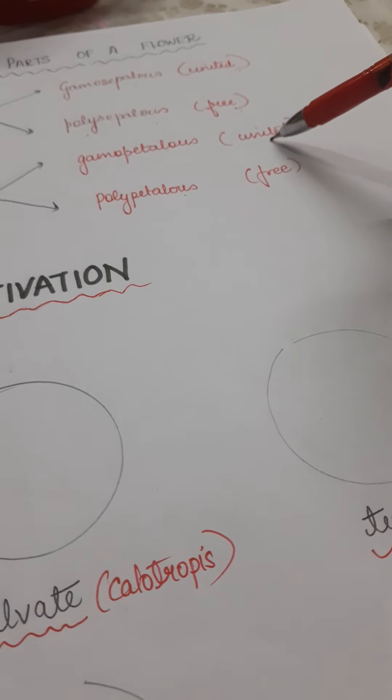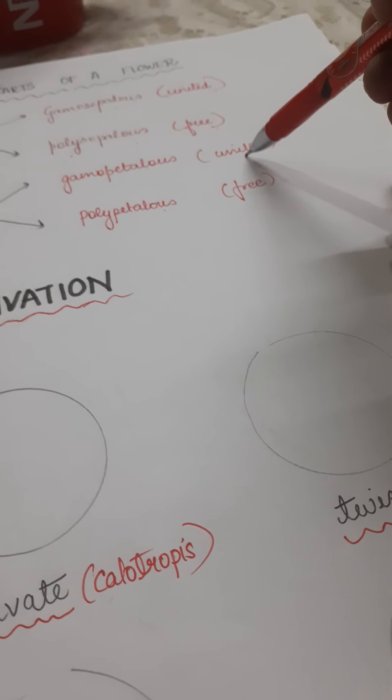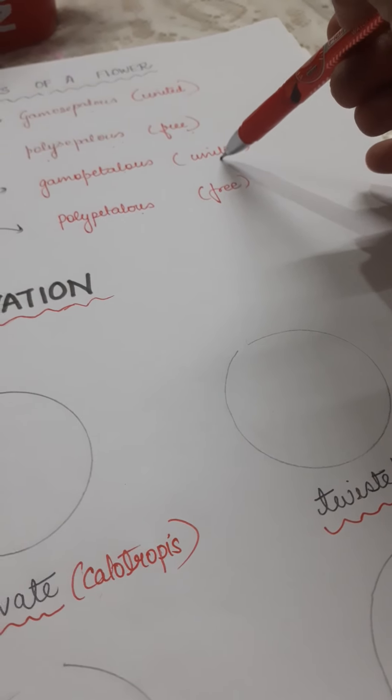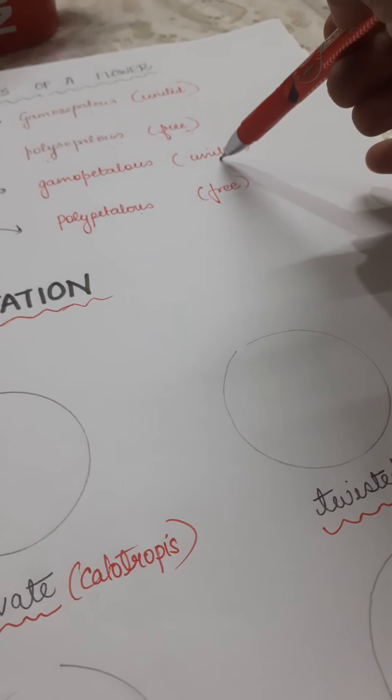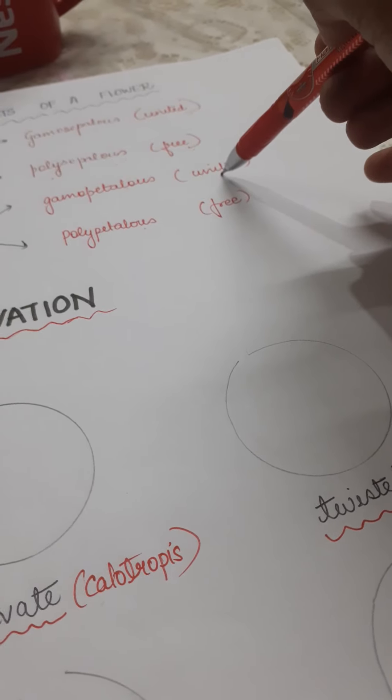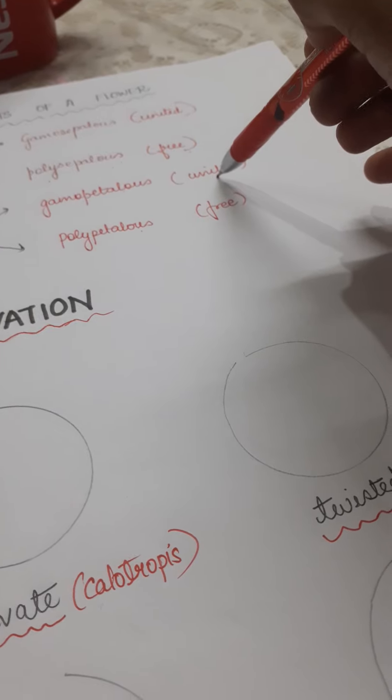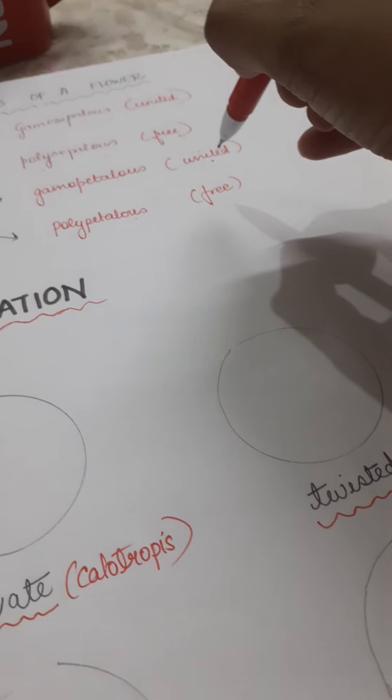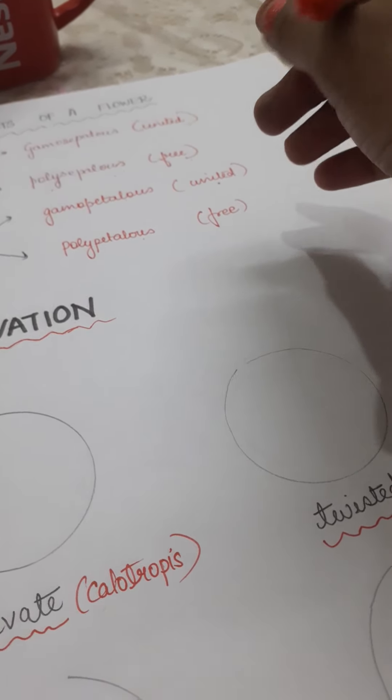Gamopetalous means the petals are united. If the petals are united, you are going to get a bell-shaped structure. Like you see in Canel, the yellow colored flower that you often find at the rim of various parks. You often play with it and wear it on your fingers, isn't it? That is Canel, Thevetia peruviana. Petunia is also gamopetalous because the petals are jointed together. When all the petals are jointed together, they will definitely end up making a bell-shaped structure.